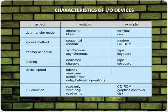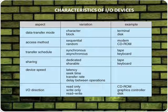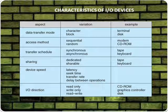Characteristics of input and output devices. Data transfer mode: variations are character and block — terminal is an example of character, disk is an example of block. Access method: variations are sequential and random — modem is an example of sequential, CD-ROM is an example of random. Transfer schedule: variations are asynchronous and synchronous — keyboard is an example of asynchronous, tape is an example of synchronous.